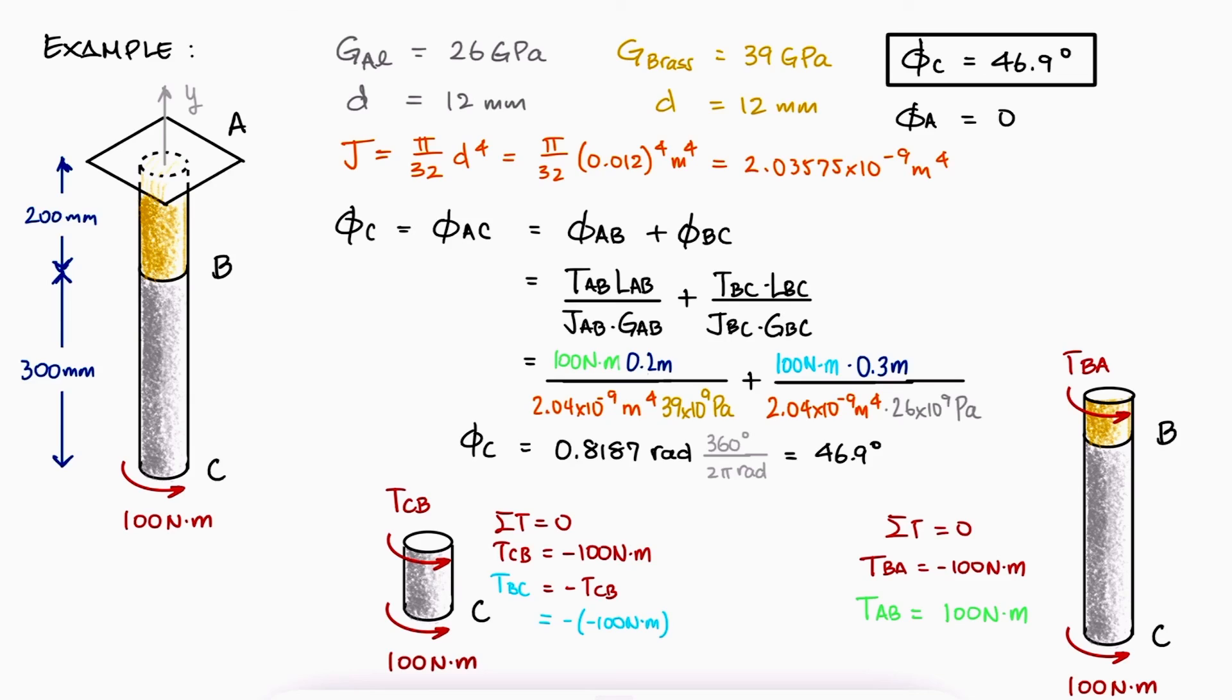This positive and counterclockwise rotation means that C rotated in the same direction as the counterclockwise external torque, which makes sense.